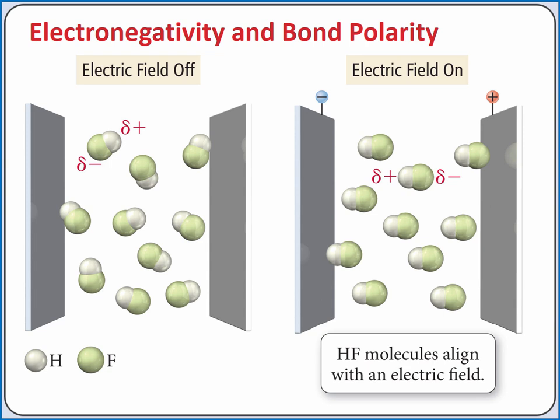If we subject gaseous HF molecules to an electric field, the partial negative on fluorine is attracted to the positive of the applied electric field, and the partial positive on hydrogen is attracted to the negative of the applied electric field.